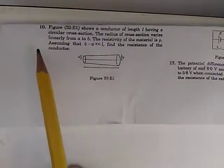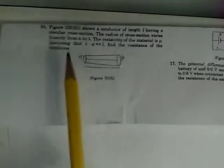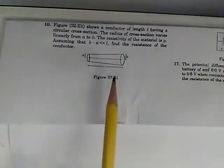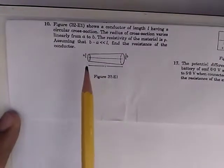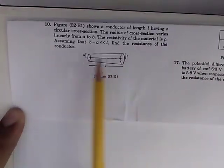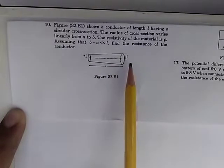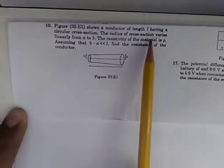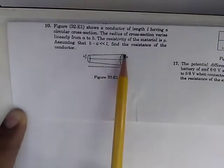Number 10 of chapter 32. We have a conductor of length L in the shape of a section of a cone with circular cross-section, and the radius of this cross-section varies linearly from A to B.